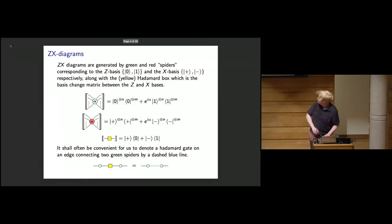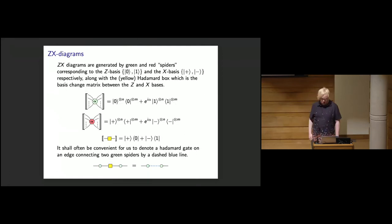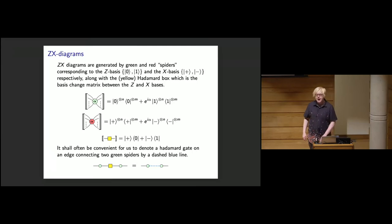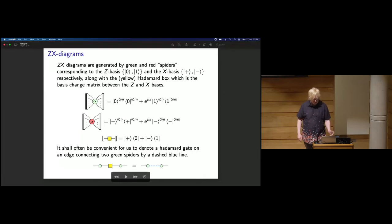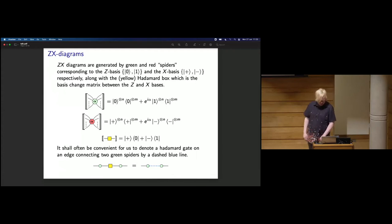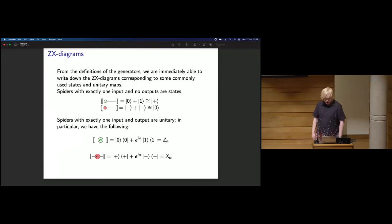ZX diagrams are generated by two sets of spiders called the green and red spiders. The green spiders correspond to the Z basis and the red spiders correspond to the X basis. We can write the Hadamard gate in terms of red and green spiders, but we give it its own generator — a yellow box — because it's so commonly used. If there's a Hadamard on an edge connecting two green spiders, we represent this by a dashed line.